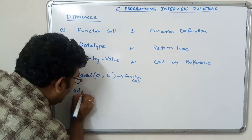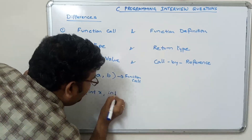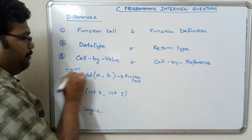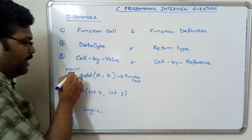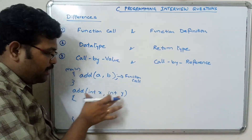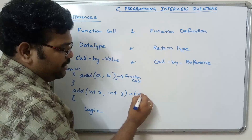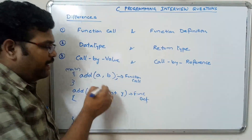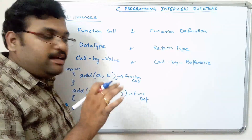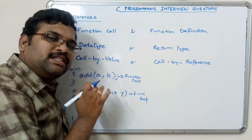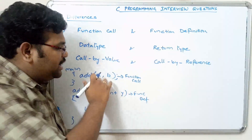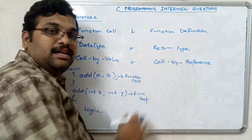In the function definition we write: add(int x, int y) and here we write the logic. This is inside the main function — we write the reference that we call the function call. Whenever the control executes add(a, b), automatically the control moves to the function definition. Here we are passing two parameters — these are called parameter passing techniques — and the parameters are the inputs given to the function call or function definition.